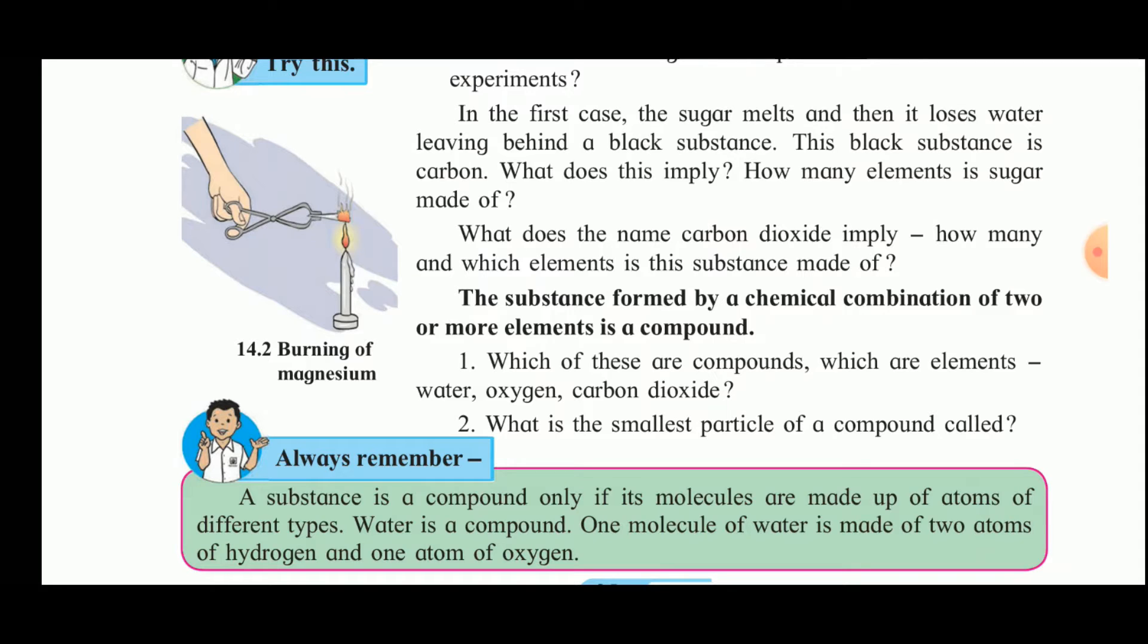Which of these are elements and which are compounds? Water is a compound made up of two elements: hydrogen and oxygen. Oxygen is an element. Carbon dioxide is a compound made up of carbon and oxygen.